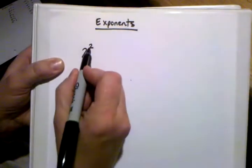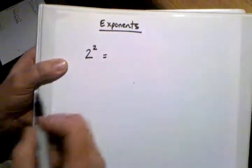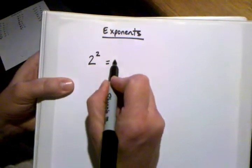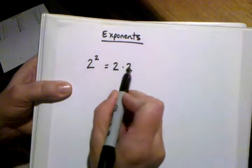All that means is that this power up here, or this exponent, is just notation to tell me that what I need to do is multiply 2 a total of 2 times. So it's 2 times 2.